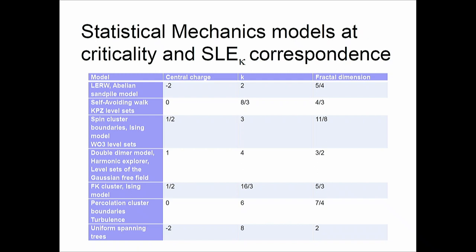This is a list of statistical physics models which we know correspond to the central charges listed in the other column. For example, the Abelian sandpile model, which you have been studying, the self-avoiding walk, the Kardar-Parisi-Zhang model, and so on — a lot of famous models. We know they correspond to these central charges because we know that this central charge gives the right exponents for them.